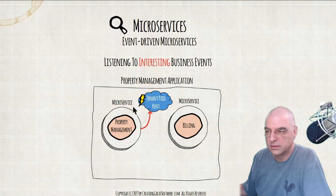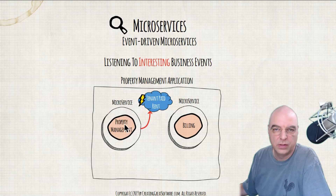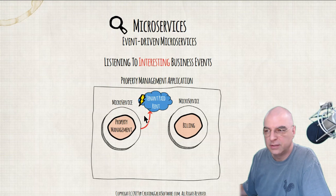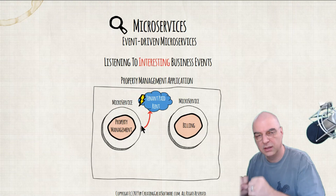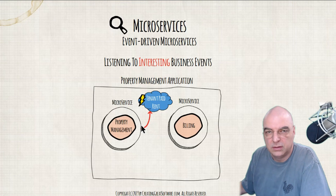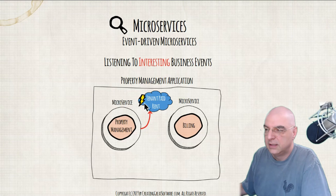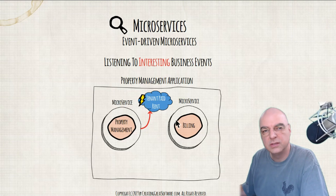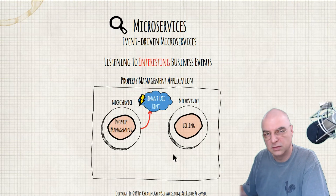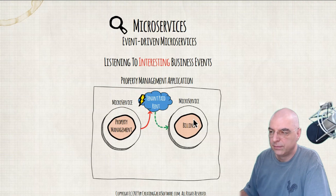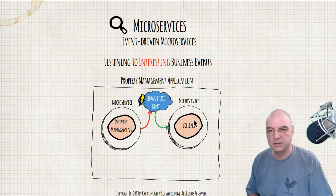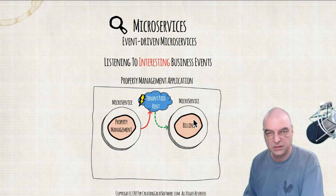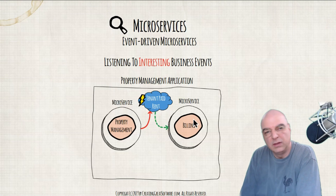The property management microservice does not need to know who else needs this information — it just publishes this domain event somewhere within the system, within the cloud provider. As long as that domain event is published, anybody interested can listen to it. The billing microservice, for instance, can subscribe to these types of business events. Keep in mind these are not necessarily technical events — they are described in ubiquitous language from domain-driven design.